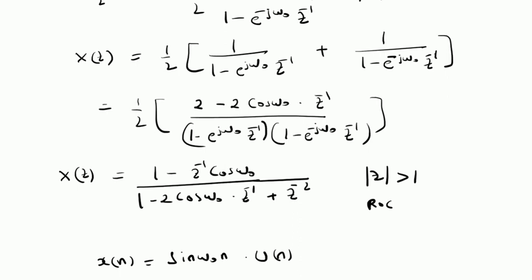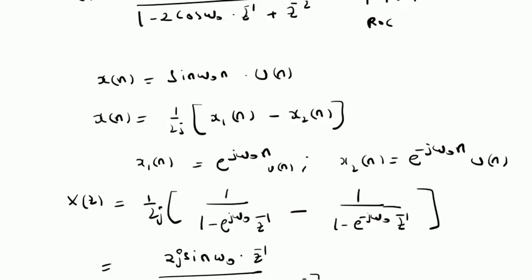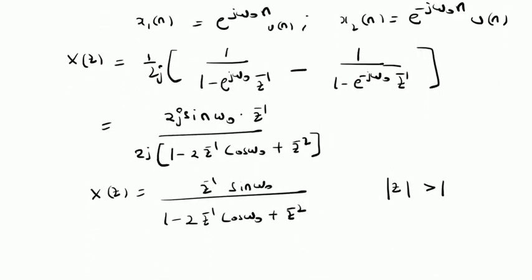Similarly, the Z-transform of the sine function, sin(omega naught n) u(n), is found to be X(z) = z^(-1) sin(omega naught) / (1 - 2 z^(-1) cos(omega naught) + z^(-2)), with ROC |z| > 1. Thanks for watching.